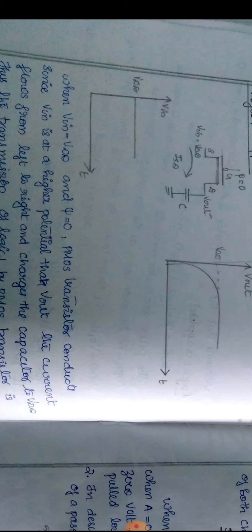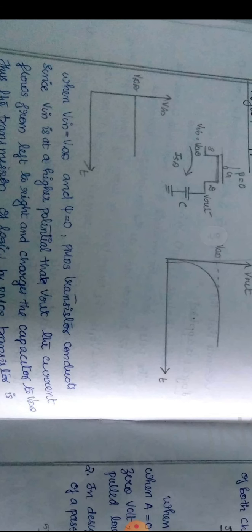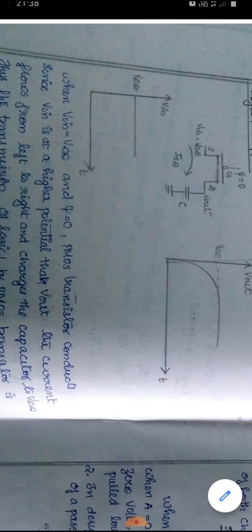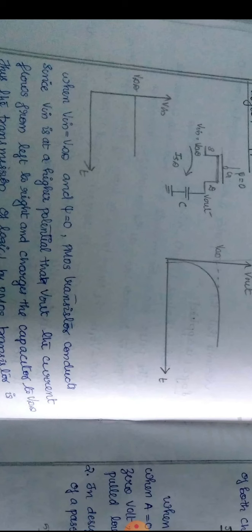The capacitor charges to VDD. In contrast to the NMOS case where the capacitor charges only to VDD minus VTN, here the capacitor charges up to the full VDD because the gate-to-source voltage remains negative throughout the charging process, keeping the PMOS transistor on until the capacitor is fully charged to VDD.